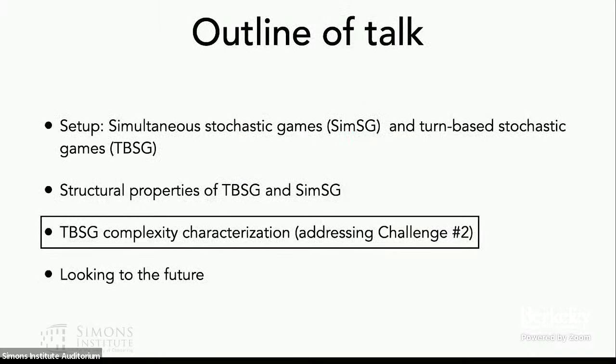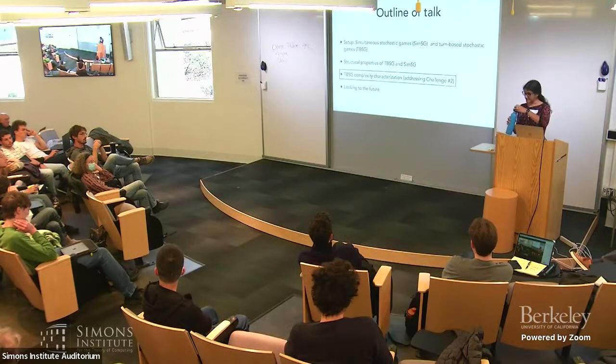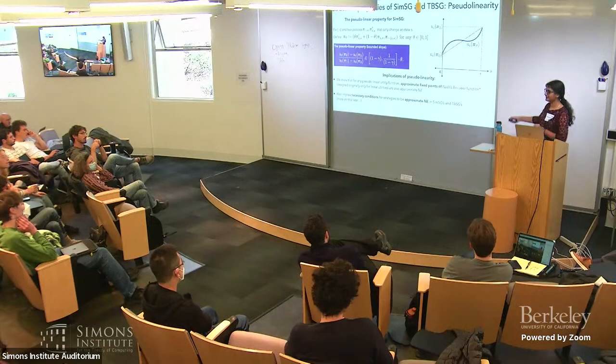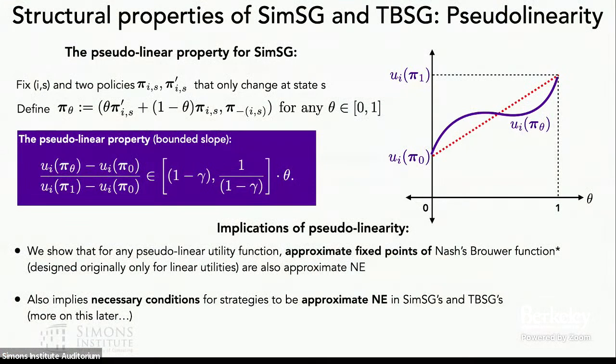Question: In what you presented, you assumed pseudo-linearity to get that result. How does that apply to general sum stochastic algorithms? We only considered the pseudo-linearity properties on policies that change at a single state. It turns out that to evaluate whether a given policy is a Nash equilibrium, it suffices to consider coordinate-by-coordinate deviations alone. That's the second piece we used.